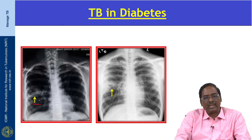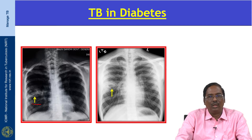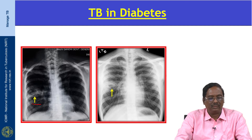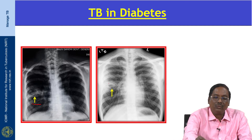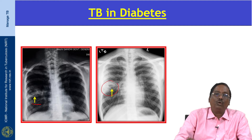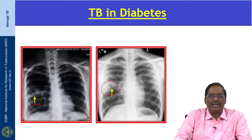Eighty percent of cases have cavitation in the lower lung field, nodules in 86 percent, and exudative lesions in 22 percent. This lower zone consolidation with a cavity is typical of TB in diabetes.